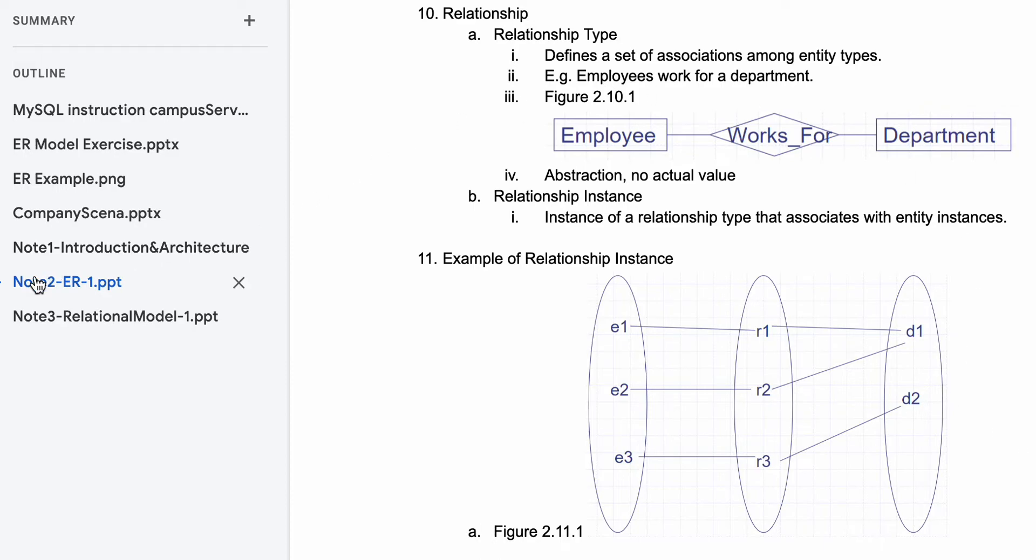Continuing our notes on entity relationships, so now we get to the relationships. First we have a relationship type, which defines a set of associations among entity types.